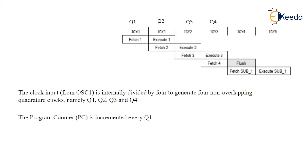When the first instruction is fetched by the microcontroller, it is executed. During execution of the first instruction, the next instruction is fetched by the microcontroller and then sent for execution. When execution of the second instruction starts, the third instruction is fetched. This process repeats, and the program counter increments every Q1, after Q4.